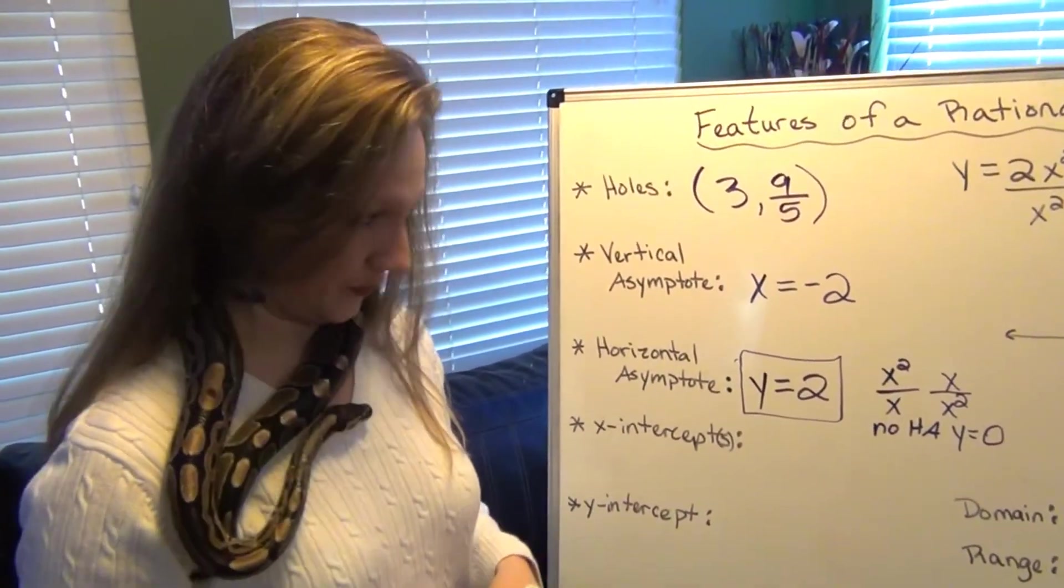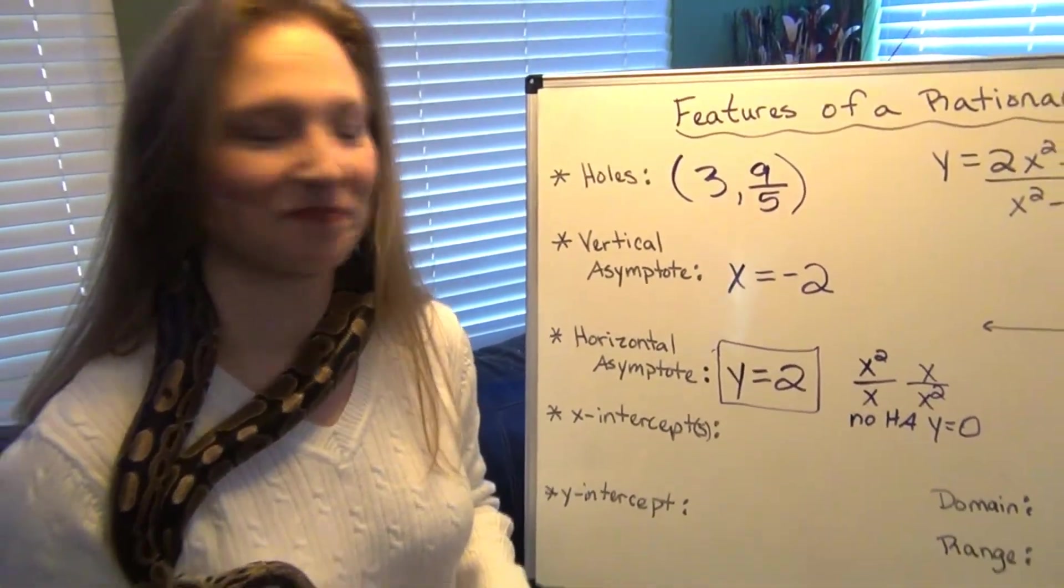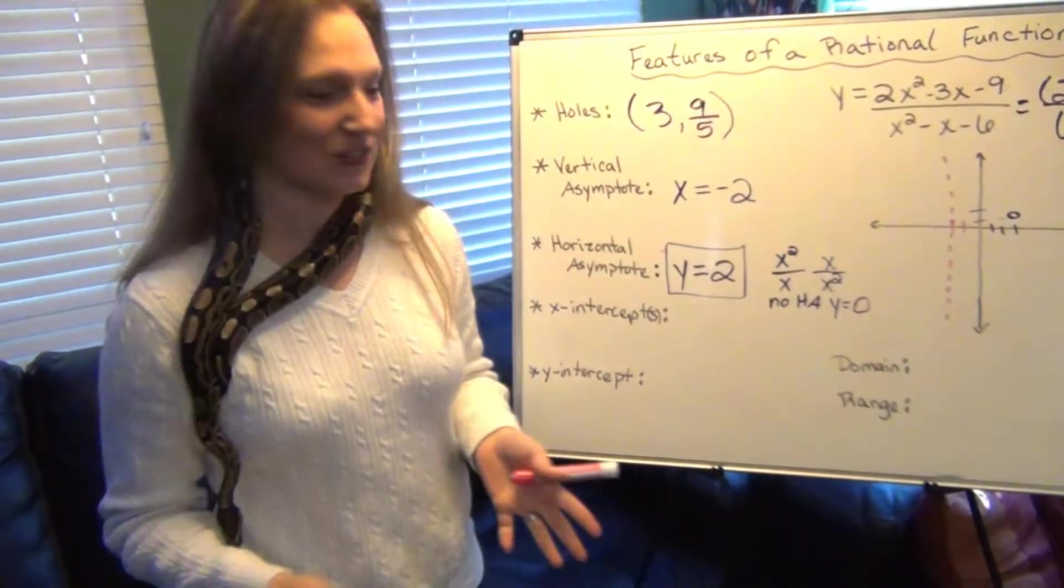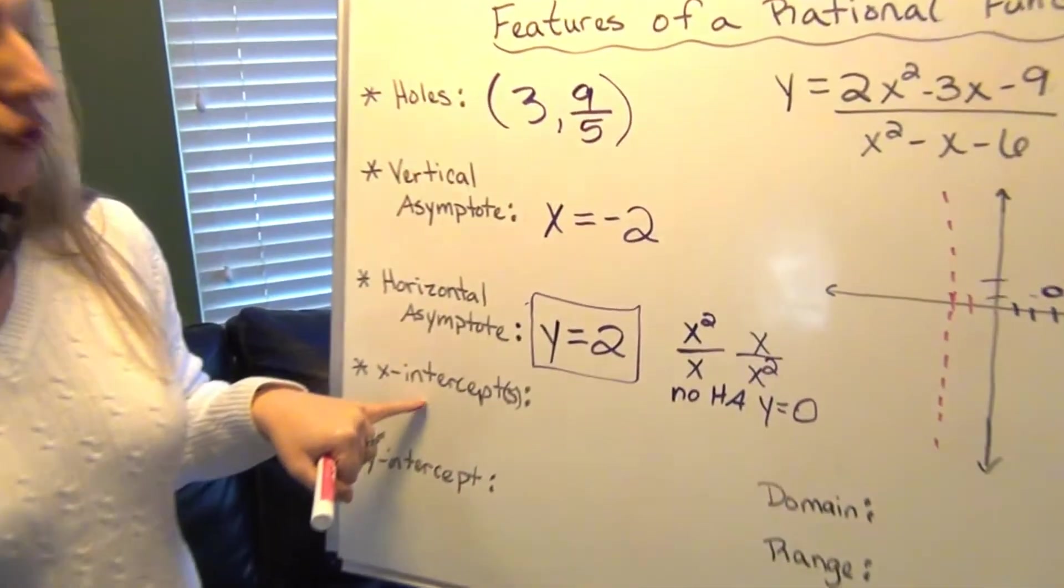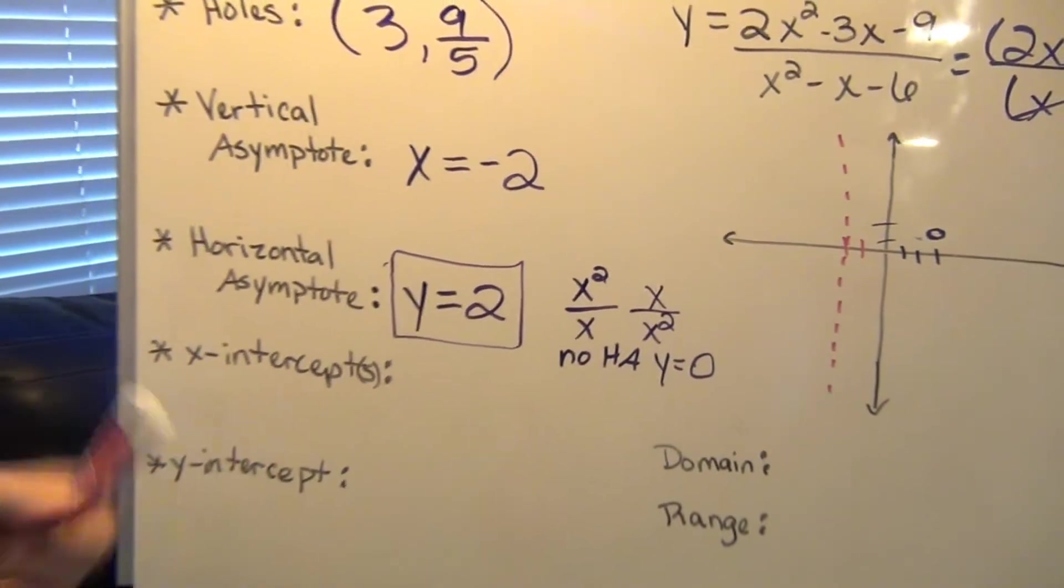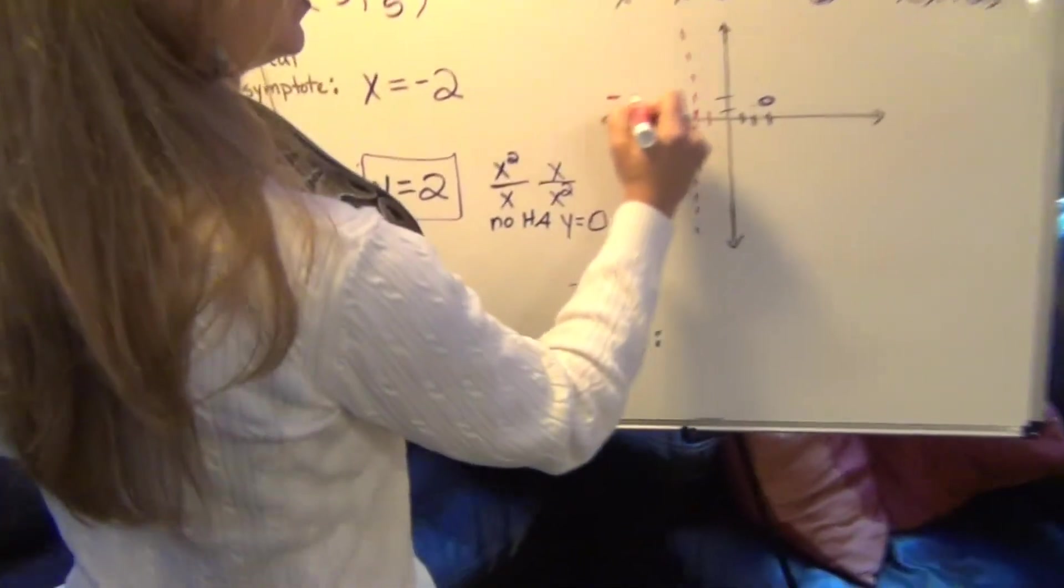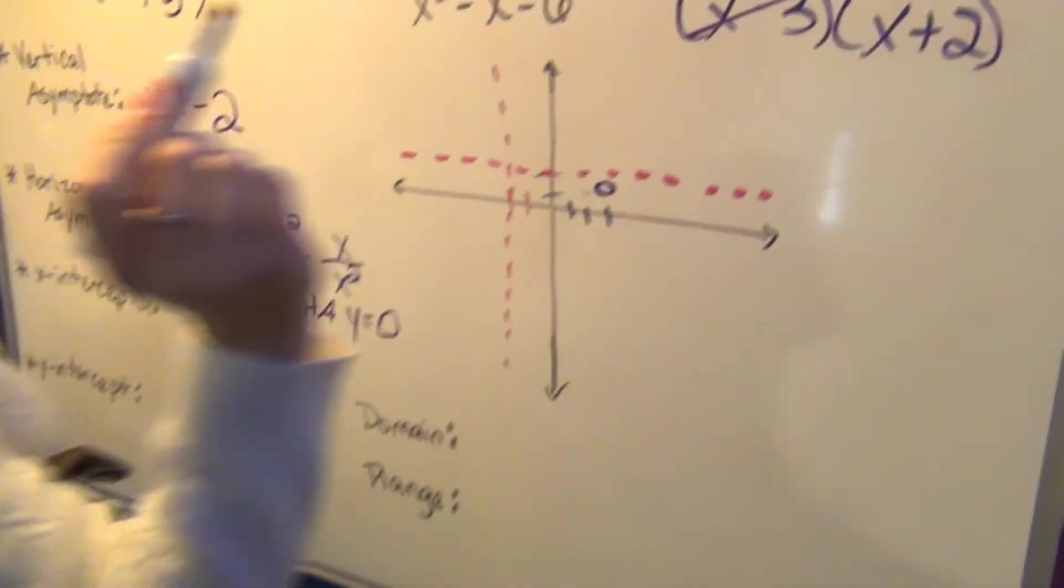And so we have a horizontal asymptote of y equals 2. What do you think about that, Gordon? Y equals 2? He agrees. All right, let's move on to intercepts. To find x-intercepts, well, let's go ahead and draw this asymptote in before we do the intercept here. So I'm going to have a horizontal asymptote at y equals 2 right there.